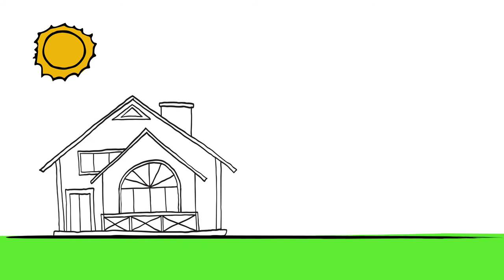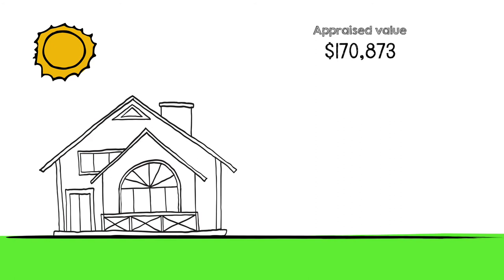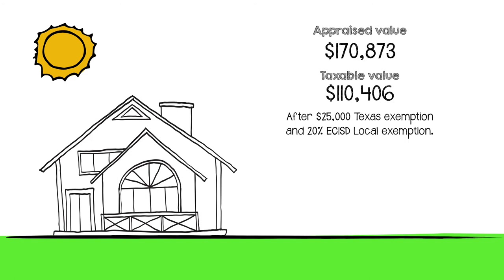According to the Ector County Appraisal District, the average home in Ector County now appraises for $170,873 and has a taxable value of $110,406. The taxable value is less because the state of Texas gives homeowners a $25,000 exemption and Ector County ISD gives an additional 20% local optional homestead exemption.